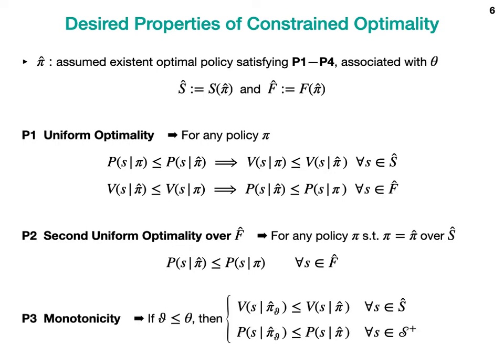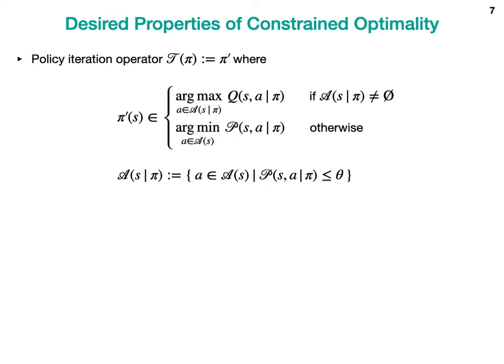The third property simply means that we should be able to achieve better performance when the constraints are weaker. We hope but don't claim the existence of such an optimal policy satisfying these three properties, and leave it as future work. Instead, we focus on the next property.